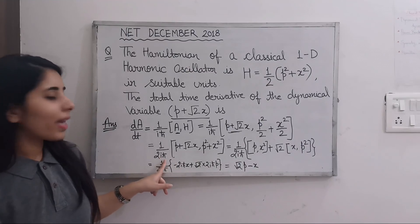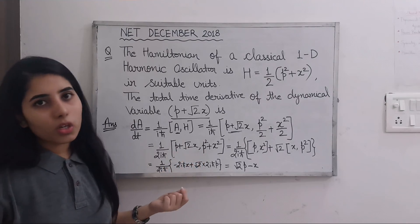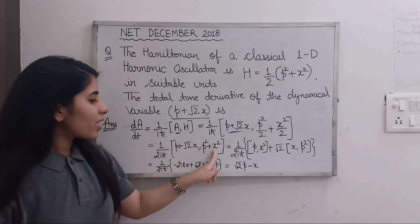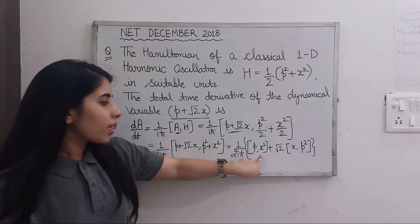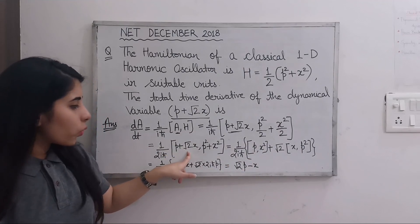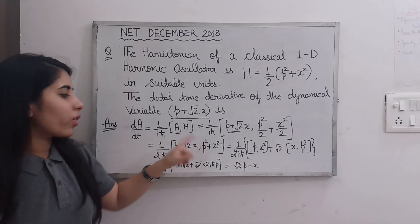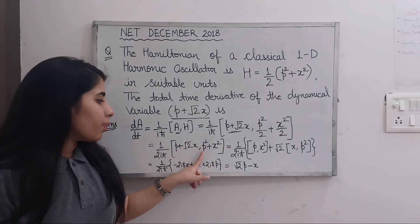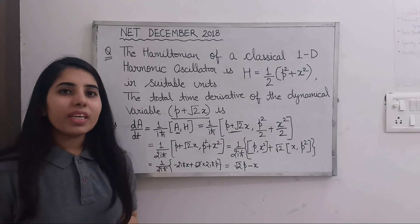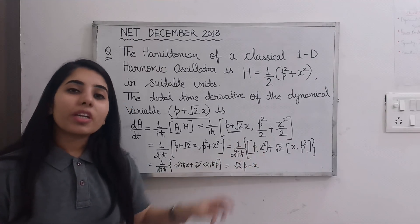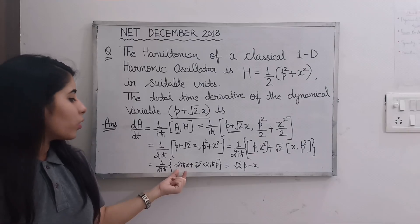Now we need to solve [p, x²]. Using the properties of commutator brackets, [p, x²] = -2iℏx. You should note this result down in your formula notebook, because sometimes such commutator brackets are directly asked in exams. Even if you need to derive it step by step, you should at minimum know [p, x] to proceed.